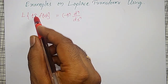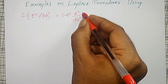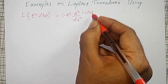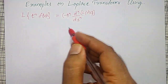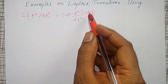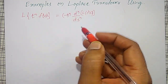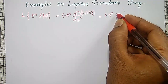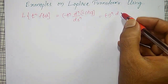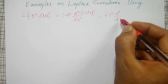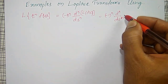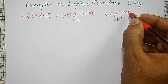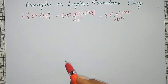You have to find out the Laplace transform of f of t and differentiate that n times. This can also be written as minus 1 to the power n into nth derivative with respect to s of capital F of s, where capital F of s is the Laplace transform of f of t.